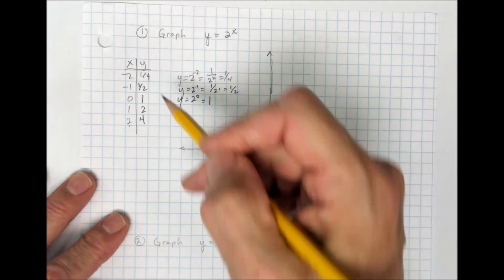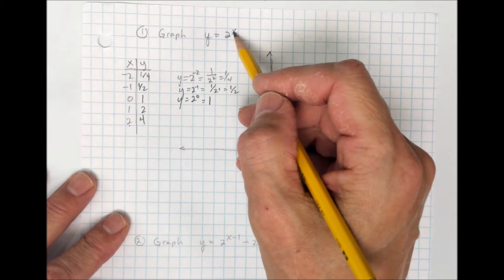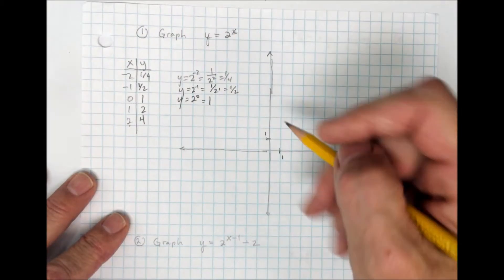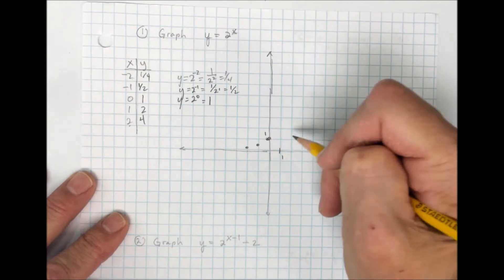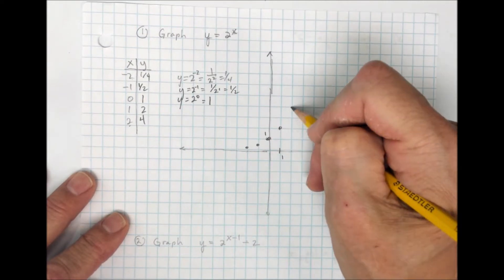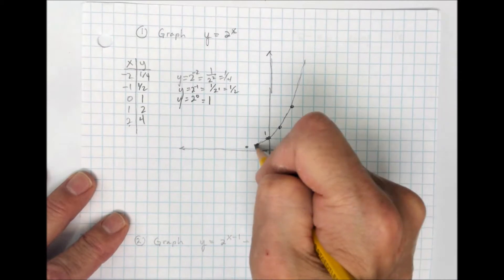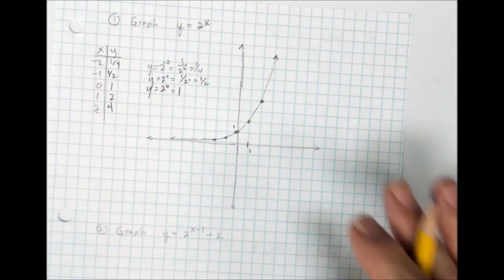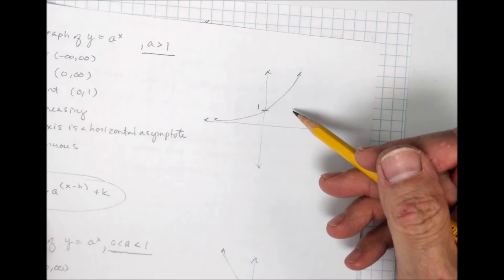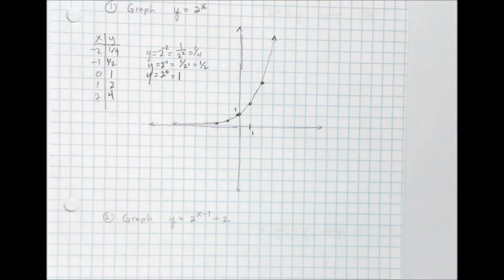Those five points give you a good idea of what's going on. I plugged in numbers that keep things hovering around 0. Graphing the five points — negative 2 at one-fourth, negative 1 at one-half, 0 at 1 (the y-intercept), 1 at 2, and 2 at 4 — and remembering the parent graph shape, you get a smooth, continuous curve that comes very close to the x-axis but doesn't cross it, passing through (0, 1).